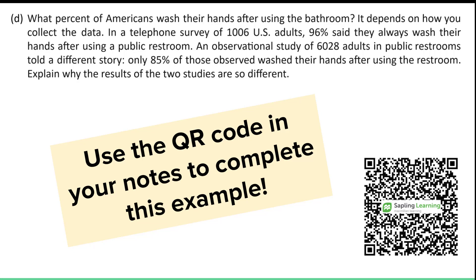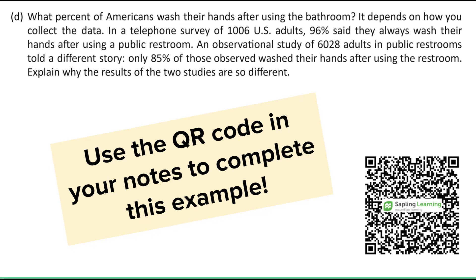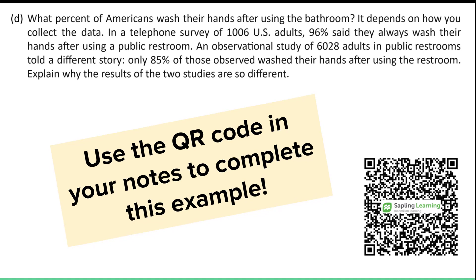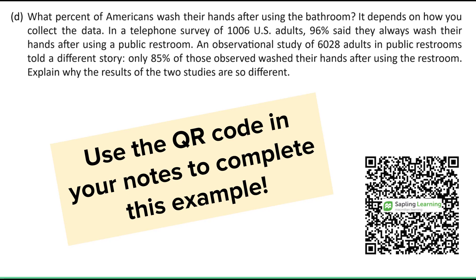The big idea is: if somebody came up to you and asked, 'Do you always wash your hands when you use the restroom?' — who's going to say no? That might be embarrassing. But if you observe individuals, 85% actually washed their hands — a big difference from 96%. When you have a face-to-face interaction, it puts you on the spot. This is response bias: we're systematically getting a response that is not representative of the population. When talking to somebody face-to-face, people are uncomfortable admitting they didn't wash their hands, so they say yes. Observation, however, captures their natural behavior and yields the real data.